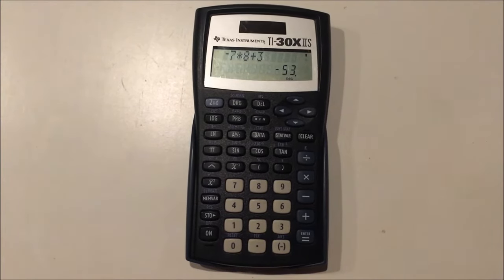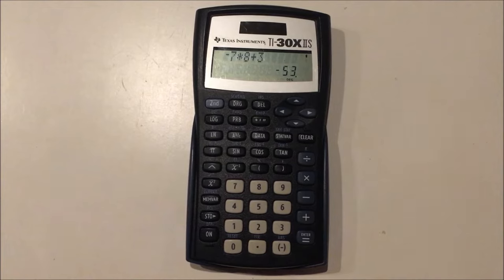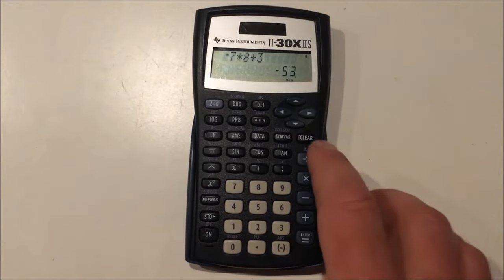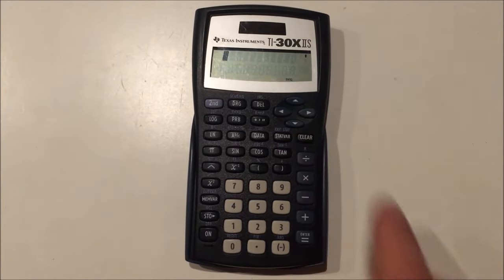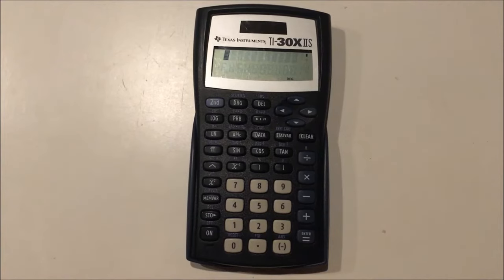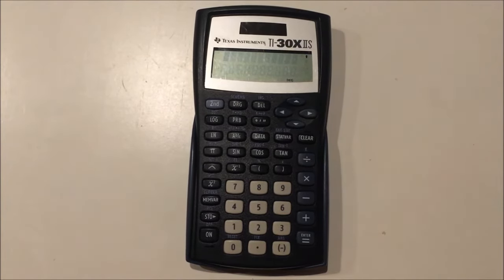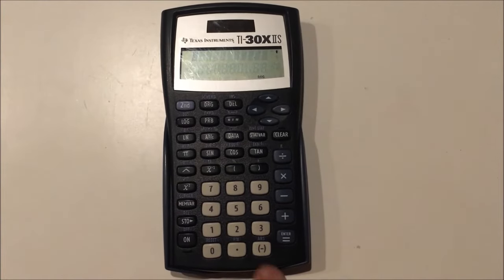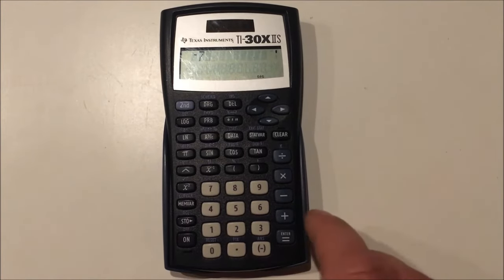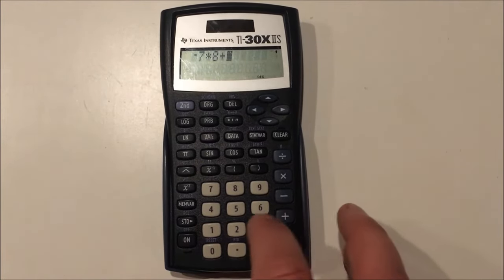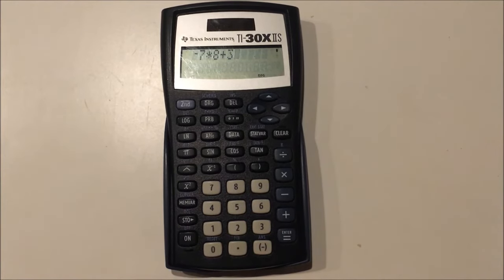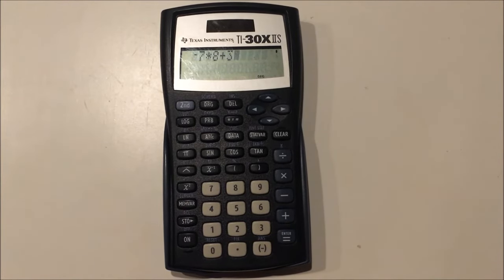Now to clear something from the screen, we would press the clear button like this and it will revert back to the main screen. Now this calculator has a lot of features that allow you to edit your expression before you evaluate it. So let's say we type in negative 7 times 8 plus 3 and we want to edit our input expression.